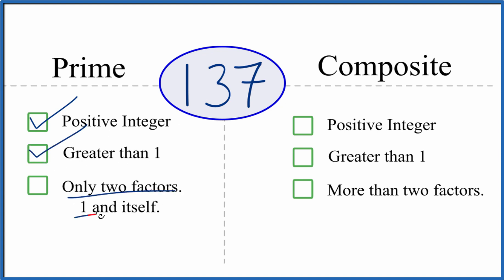And are there only two factors, 1 and 137, that go evenly into 137? So we know 1 times 137, that would give us 137. So there's two factors. But are there any more?